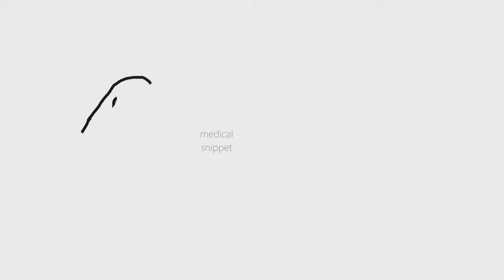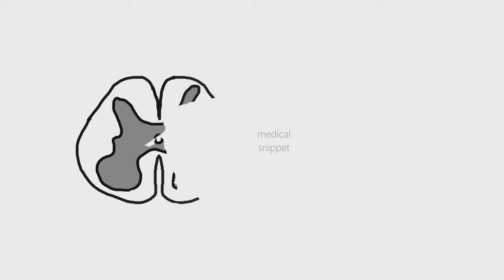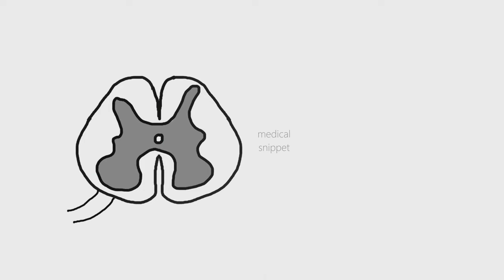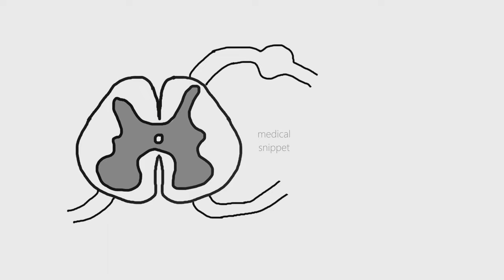Let's discuss the formation of the spinal nerves. Let's draw the cross section of the spinal cord. It has white matter in the periphery, grey matter inside, and a tiny central canal filled with cerebrospinal fluid at its center. Each spinal cord segment has 4 nerve roots: 2 anterior or ventral roots, and 2 posterior or dorsal roots.